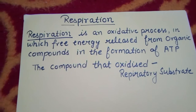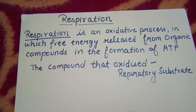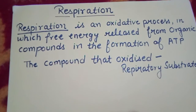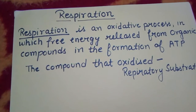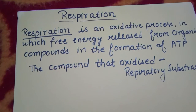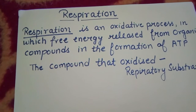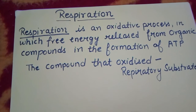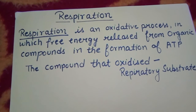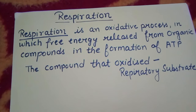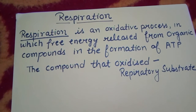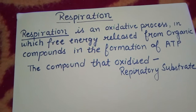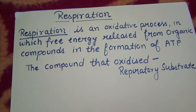Glucose is a type of carbohydrate and a monosaccharide. There are two types of respiration: aerobic and anaerobic. In aerobic respiration, oxygen is present, oxidation takes place completely, and 32 molecules of ATP are produced. In anaerobic respiration, only two molecules of ATP are produced because oxidation is not complete.